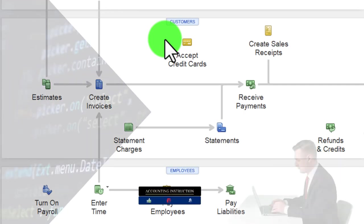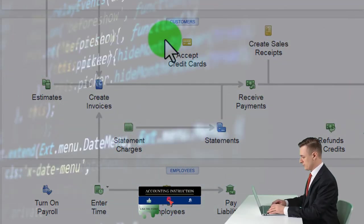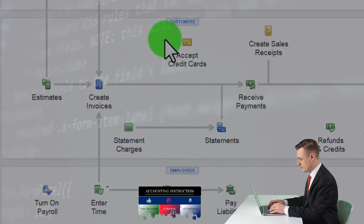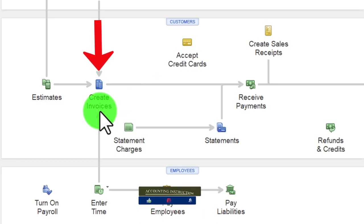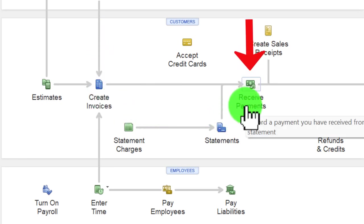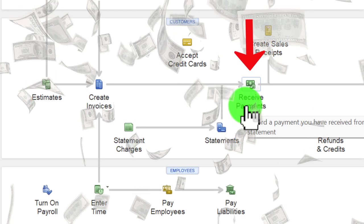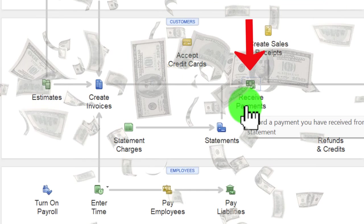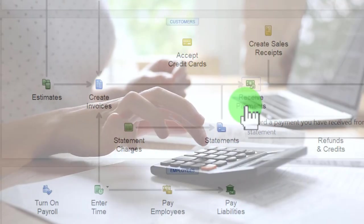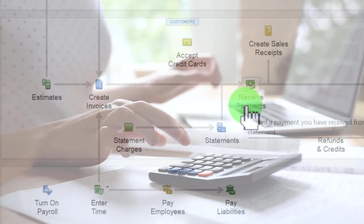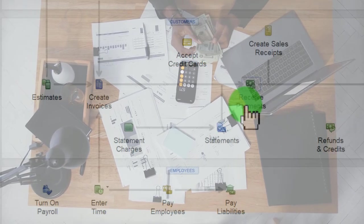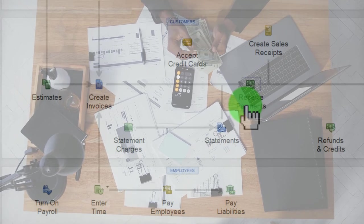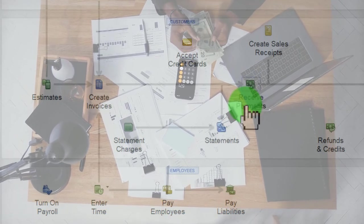Let's recap the flow of the revenue cycle — the accounts receivable cycle. On an accrual system, we do the work or provide the inventory first, then invoice the client to receive payment later. We demonstrated that with the invoice and then the Receive Payment form. When we enter a Receive Payment, we could put it directly into the checking account, but the default is to put it into undeposited funds, because we may have multiple deposits that will be grouped together.